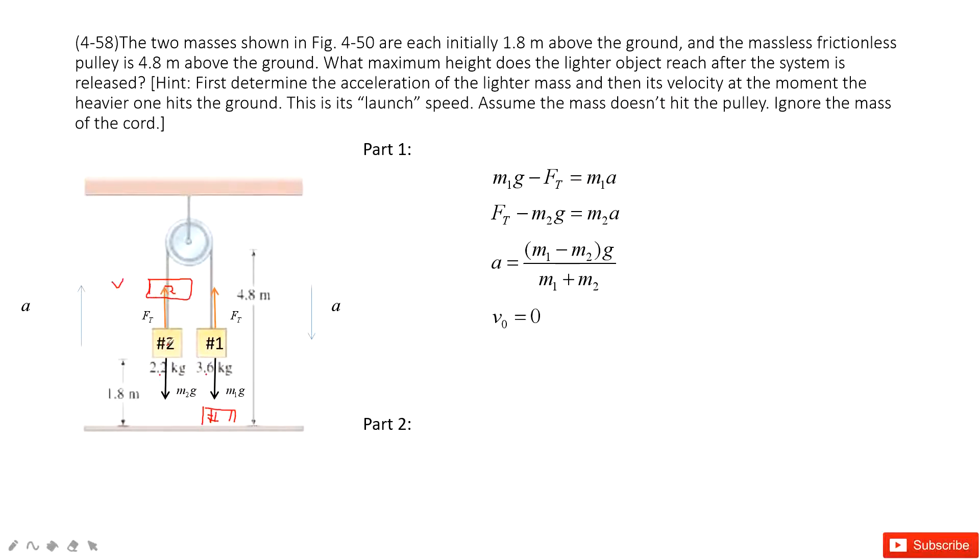You can see, we know the initial velocity when we released is zero. Acceleration is given. We find acceleration a. And the displacement is 1.8 meter. Because this cable is connected, when number 1 hits the ground, the displacement number 1 moved is 1.8 meter. So number 2 moved is exactly 1.8 meter. Therefore, we can get the velocity at this point. Do you agree? Very easy. Use our favorite equation, this one, to get the velocity.